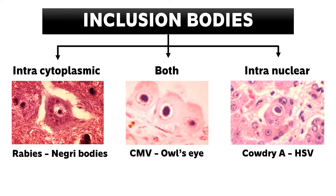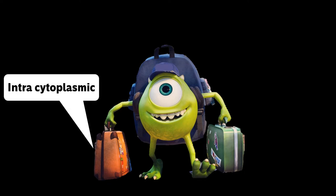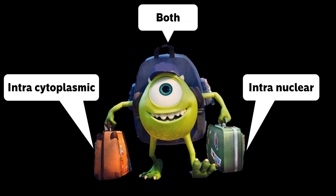Let me remind you: in the thumbnail I've created, there is a creature — imagine this creature is a virus that is going to cause inclusion bodies. It is carrying three different bags, and each bag represents a different category of viral inclusion bodies. The first bag represents intracytoplasmic inclusion bodies, the second bag represents intranuclear inclusion bodies, and the third bag represents both intracytoplasmic as well as intranuclear. This way you can visually remember that there are three different categories.